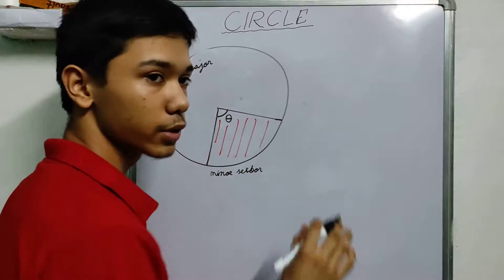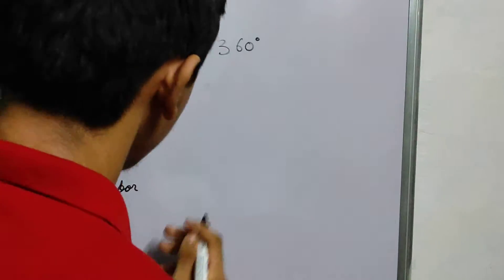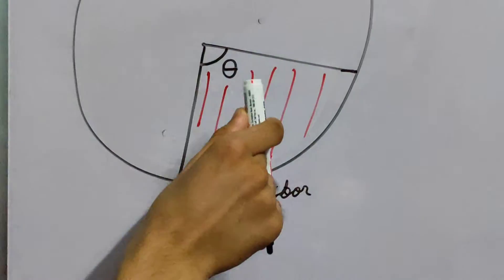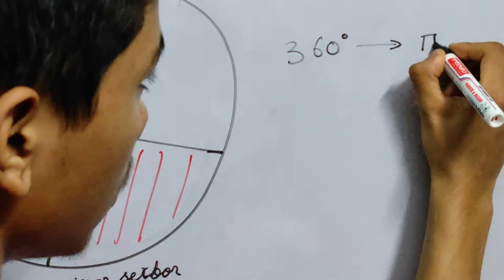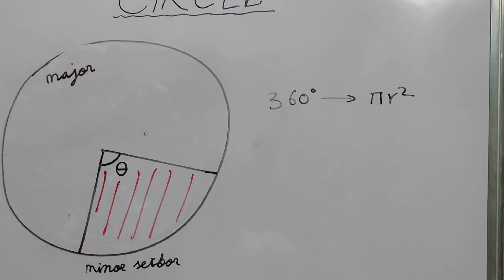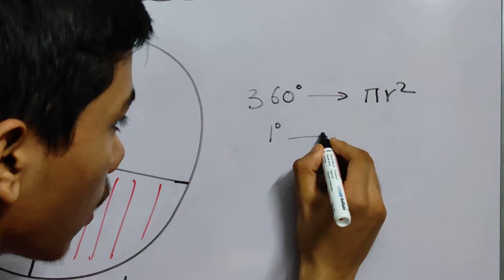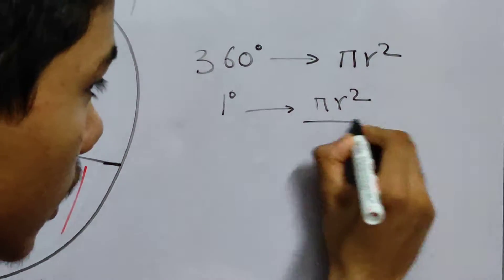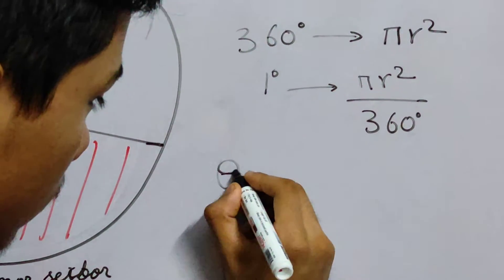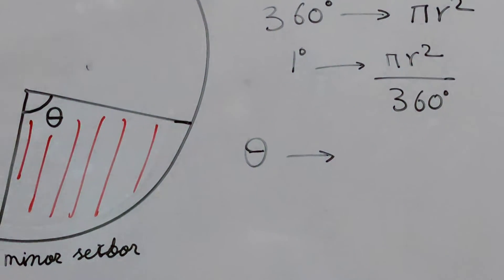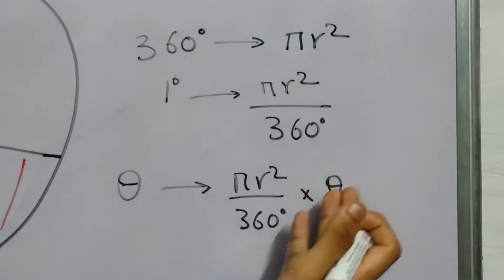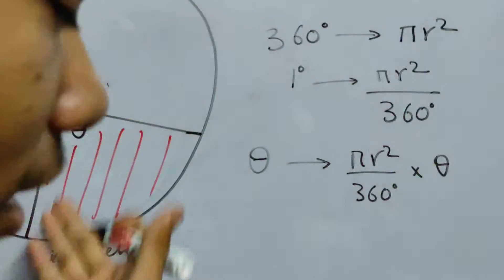Using the unitary method: 360 degrees means you complete a full circle, which corresponds to area πr². So 1 degree corresponds to πr²/360. And then for any angle theta, the area covered will be (πr²/360)·theta. This is the area of a sector.